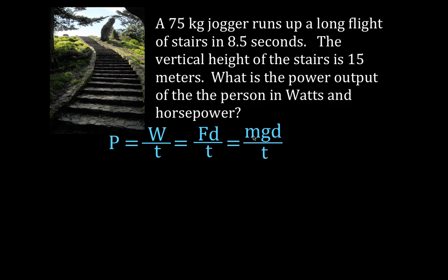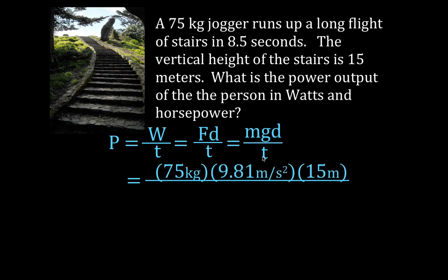It's the mass of the object times the acceleration due to gravity, times the distance it's raised, divided by the time. So we're going to say that is 75 kilograms times the acceleration due to gravity, 9.81, times the distance it's raised, 15 meters, divided by the time, 8.5 seconds. And you get that the power output of that person to raise their 75-kilogram body up 15 meters in 8.5 seconds is 1,300 watts.